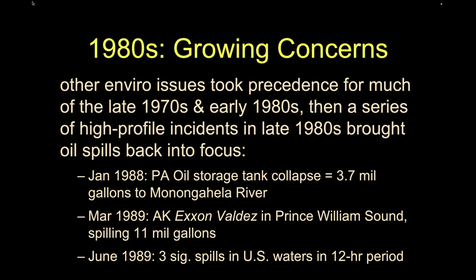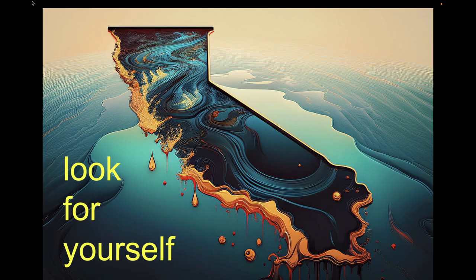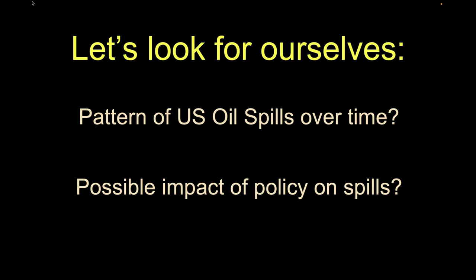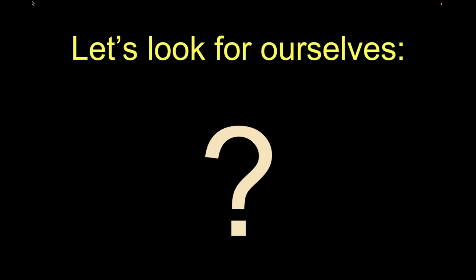Now let's get into you guys doing something. We're going to do an exercise looking at patterns of U.S. oil spills over time — to see whether these policies had an impact. Let me ask: what do you think the general pattern over time will be for oil spills in U.S. territory? One student said they would hope spills decrease, but maybe back in the day they weren't reporting all of it. Maybe on average we're getting fewer spills. That's a good guess. But another argument: we have more technology to go further, so the quantity of activity might be going up.